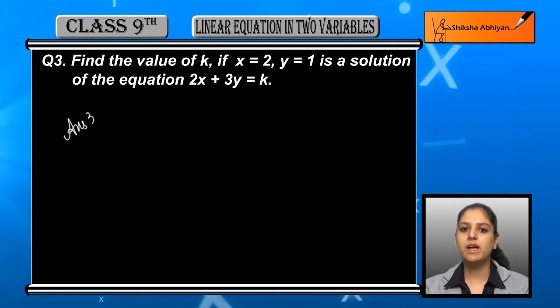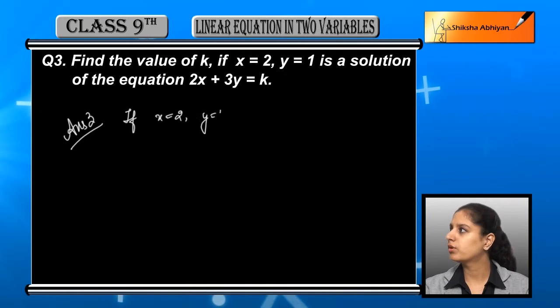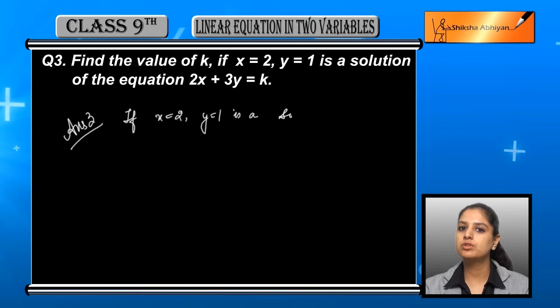Let us see how. The equation we have given already is 2x + 3y = k. The two solutions which are already given: x = 2 and y = 1. This is already told that x's value is 2 and y's value is 1.